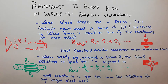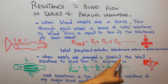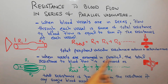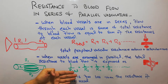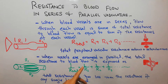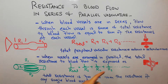But practically, it is not like that. When vessels are arranged in parallel, the total resistance to blood flow is expressed as: 1 over total resistance equals 1 over R1 plus 1 over R2 plus 1 over R3, and so on.